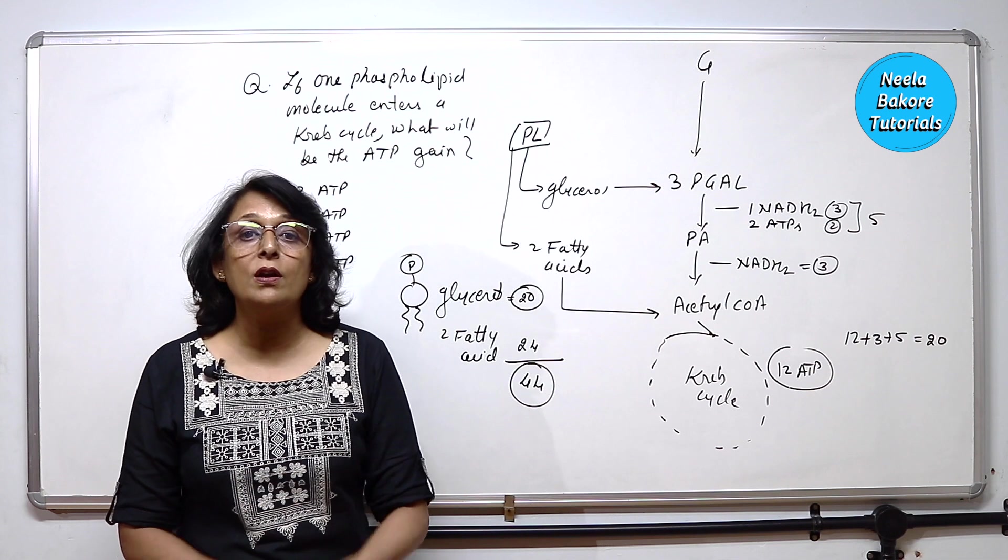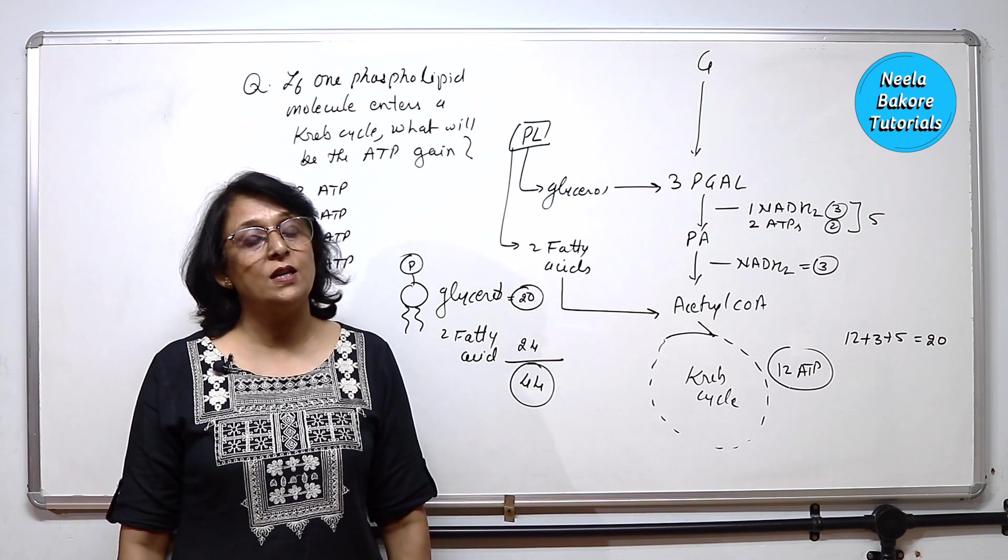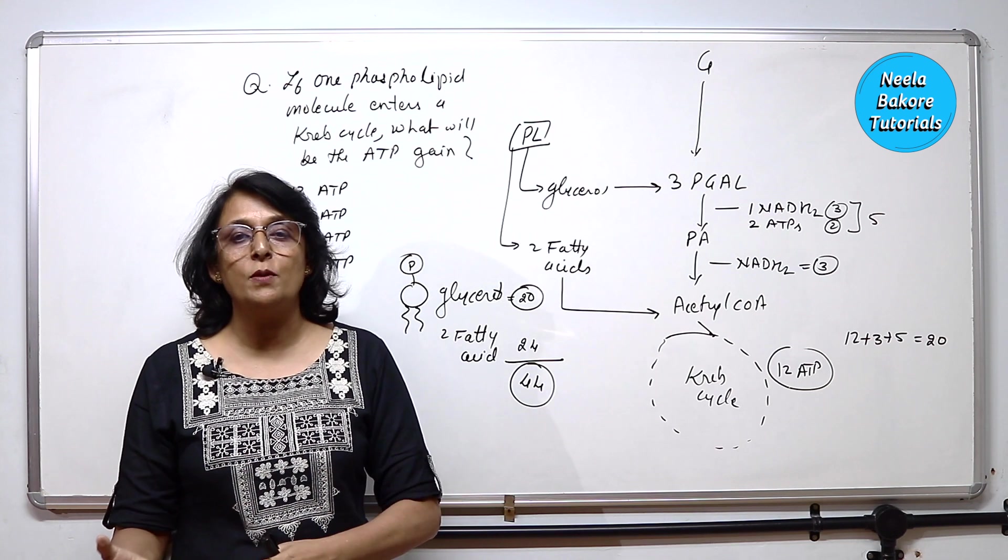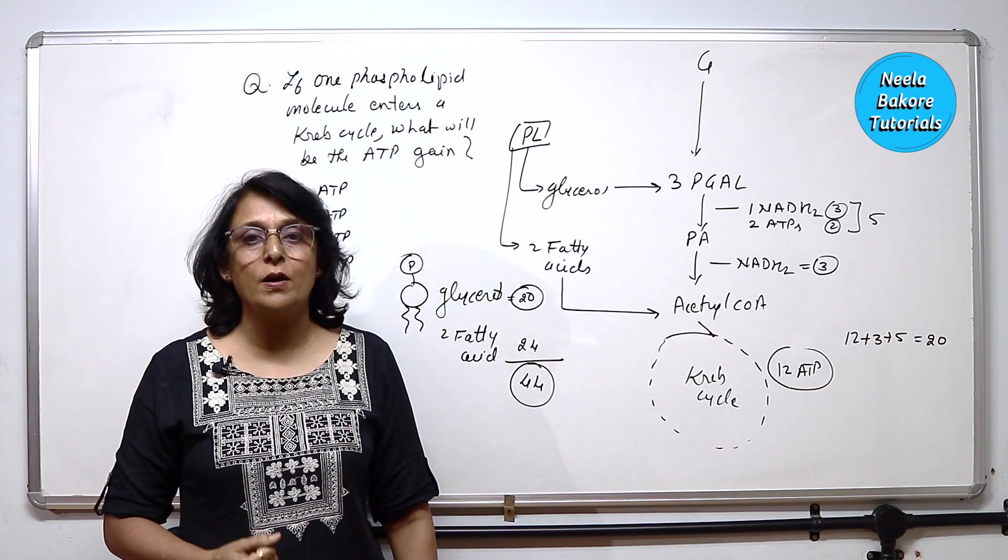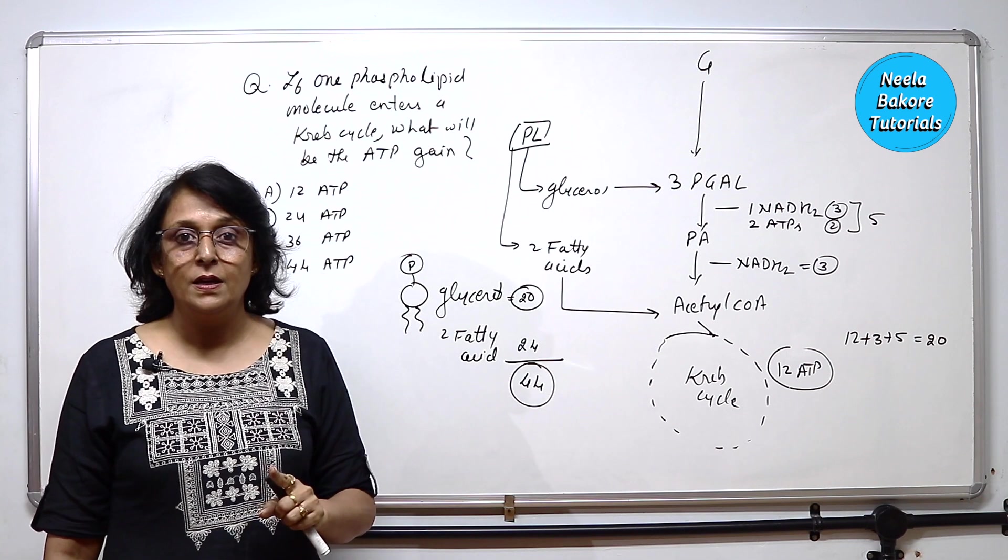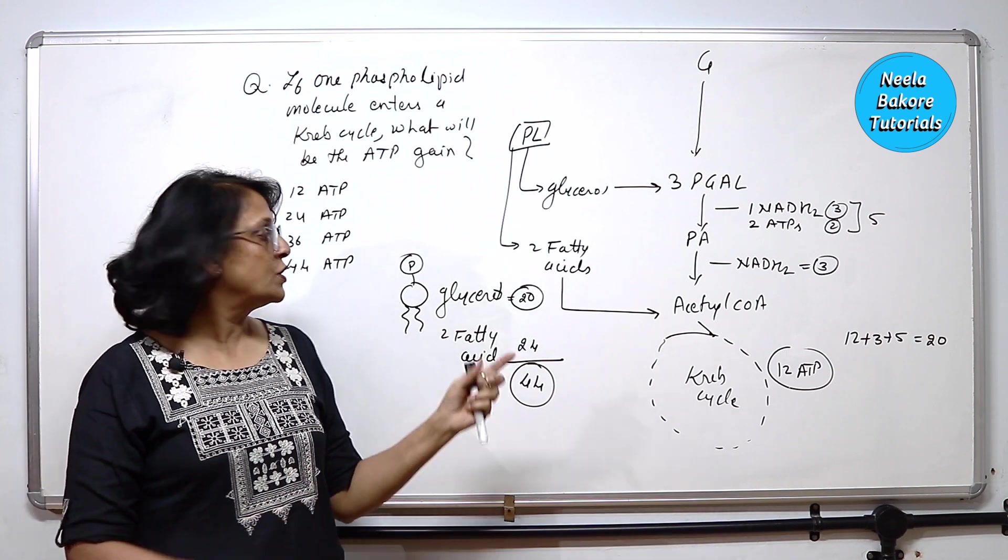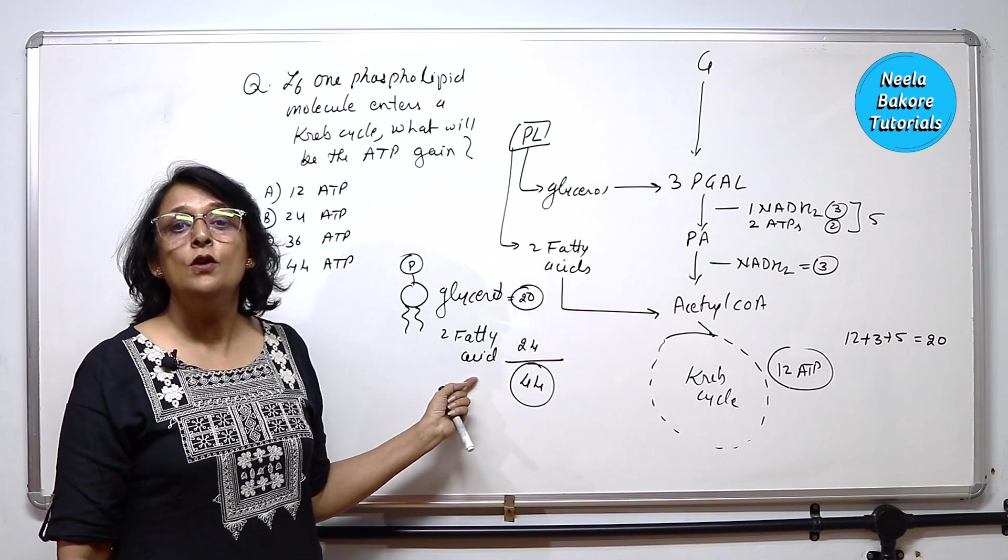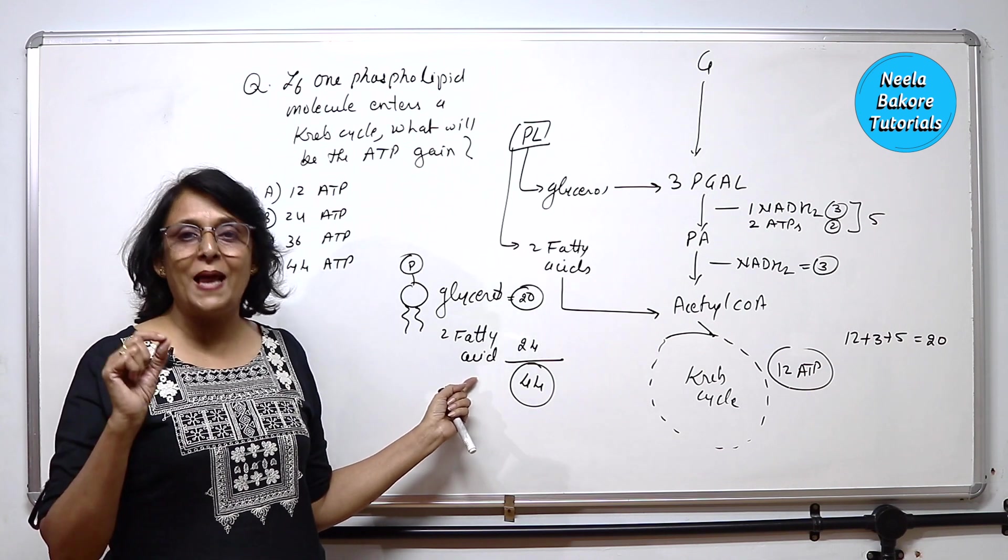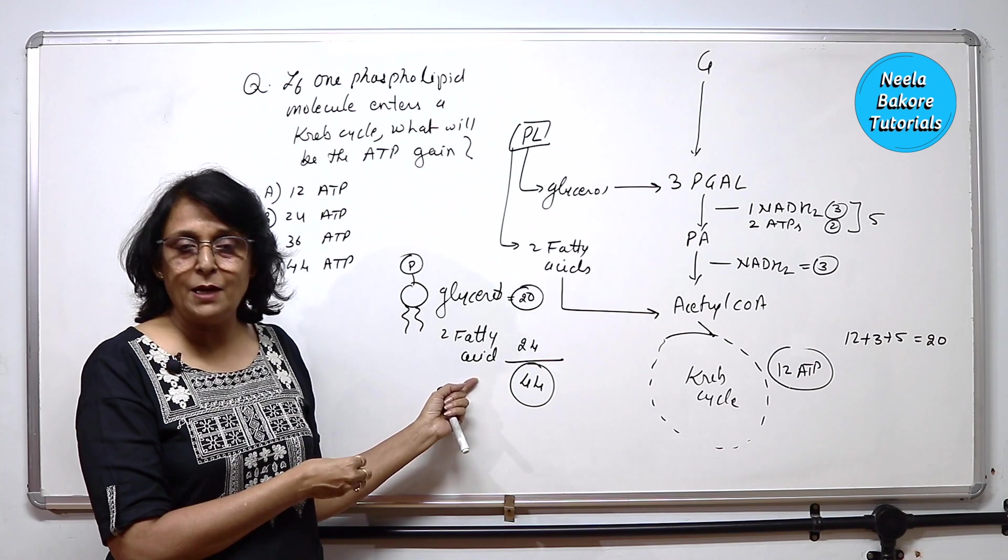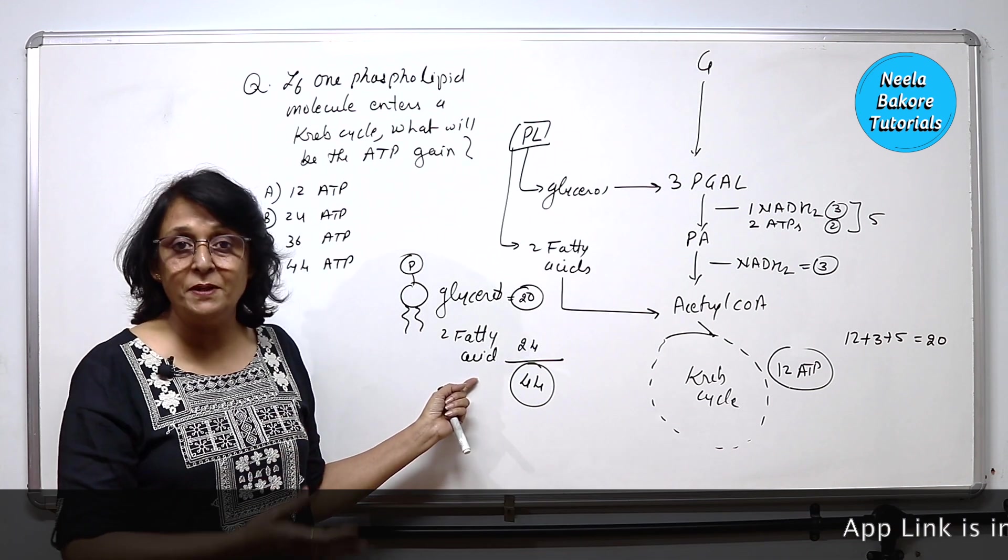Some of you wrote that phospholipids do not participate in this, I know they do not participate. And that is why the question started with if. Some students wrote that phospholipid will undergo beta oxidation of fat. Phospholipid is a part of plasma membrane and that doesn't come and take part in this breakdown, ATP generation.